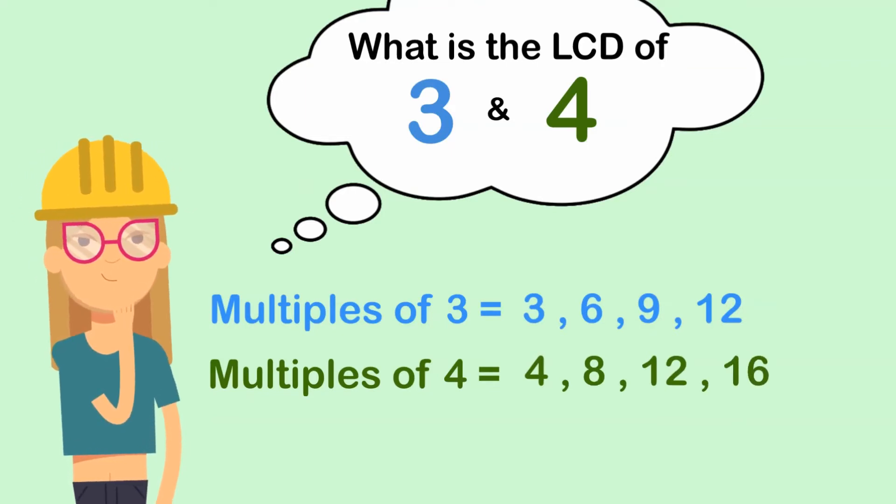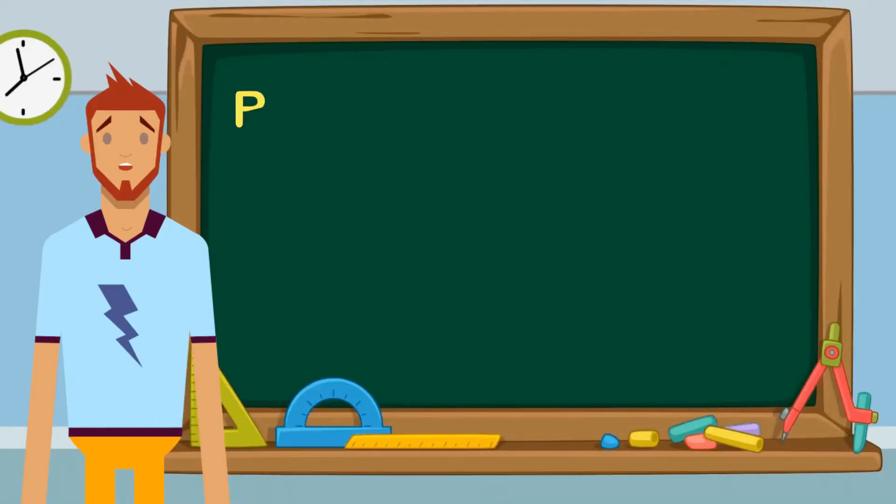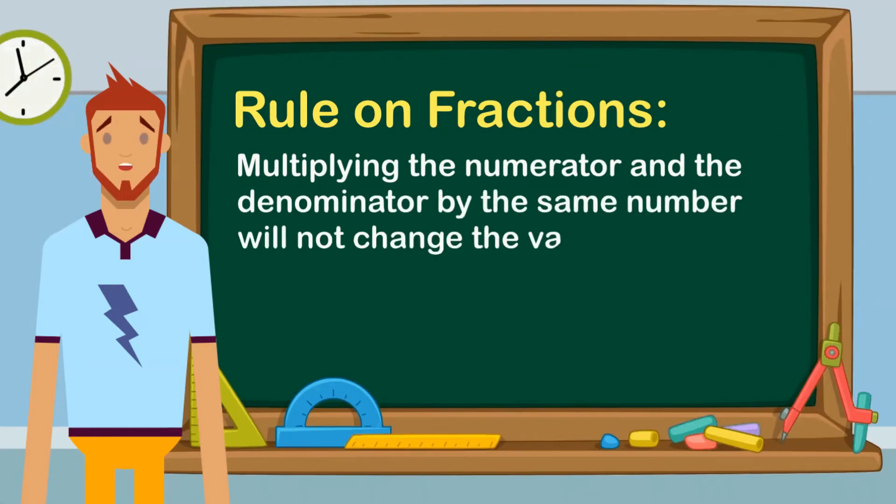Now that we have their multiples written down, it's easier to see that our LCD is 12. Here's a rule about fractions: multiplying the numerator and the denominator by the same number will not change the value of the fraction.